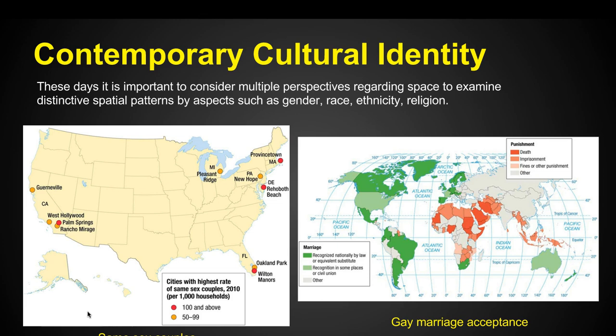Contemporary culture and identity — contemporary meaning these days. Right now, it's important to consider multiple perspectives regarding space to examine distinctive spatial patterns by aspects such as gender, race, ethnicity, and religion. We want to identify pieces of data from our culture that might help us understand why things are the way they are, why people live where they do, and how they connect. For example, if we look at data for same-sex couples, we can see where they live and start to ask questions.